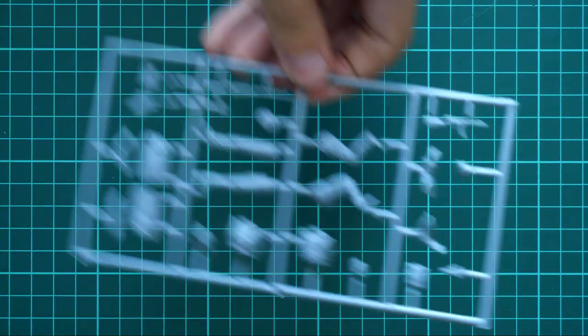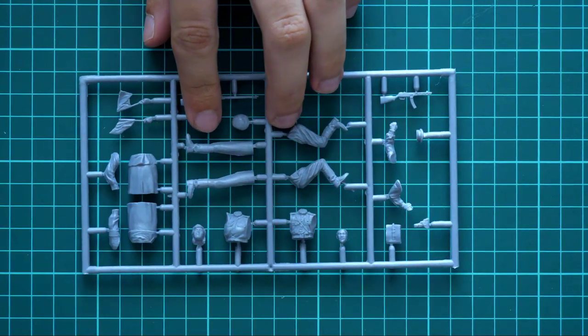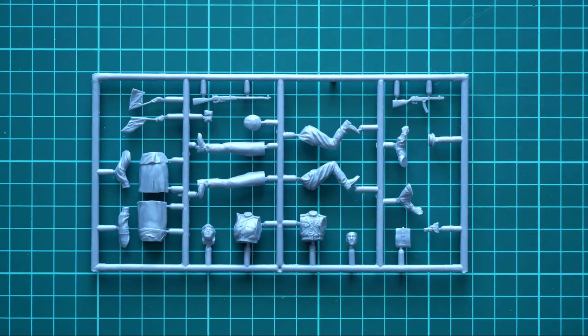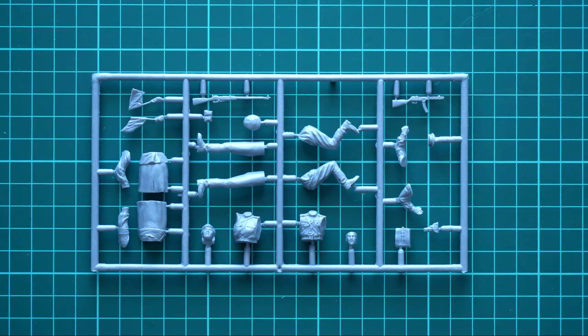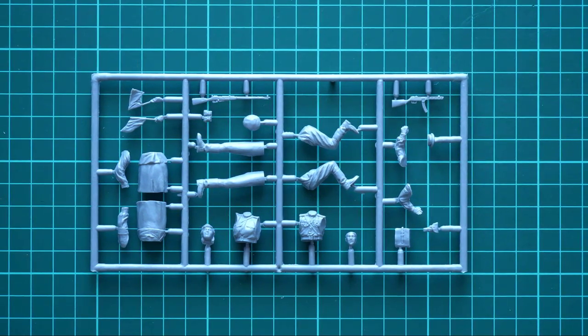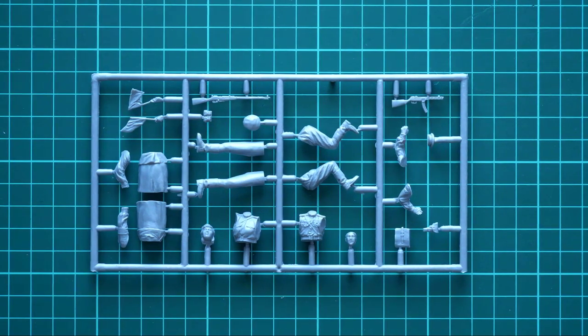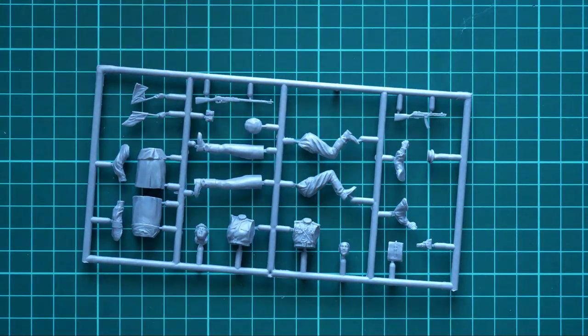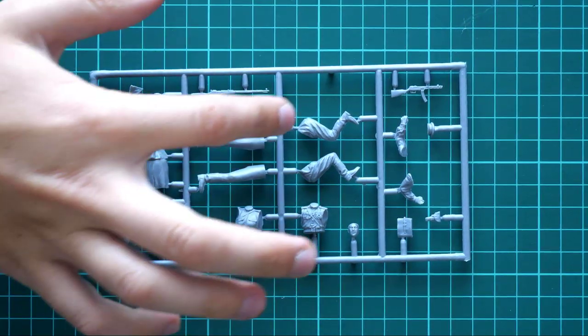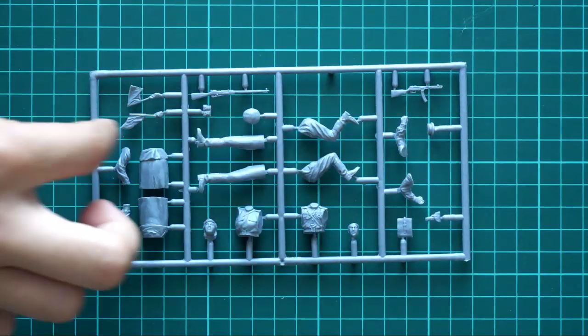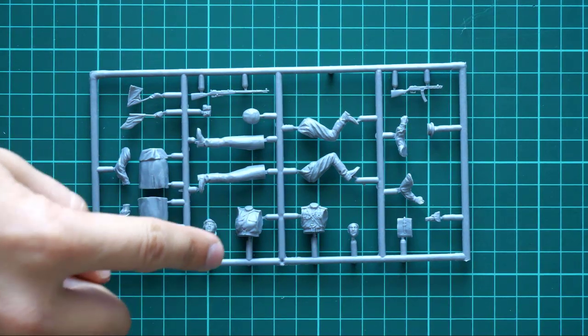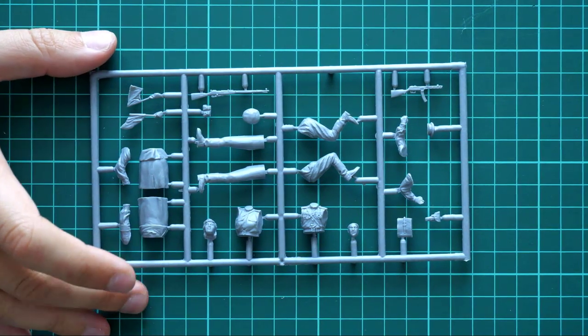Next we have figure parts. They come on a separate plastic sprue. Note that parts are not numbered, so you'll have to look carefully at the marking guide which also serves as an assembly guide, and track the elements you need for your build. Here we have typical parts division for 1:35 scale—separate legs, separate hands, and one-piece torsos molded with various details.